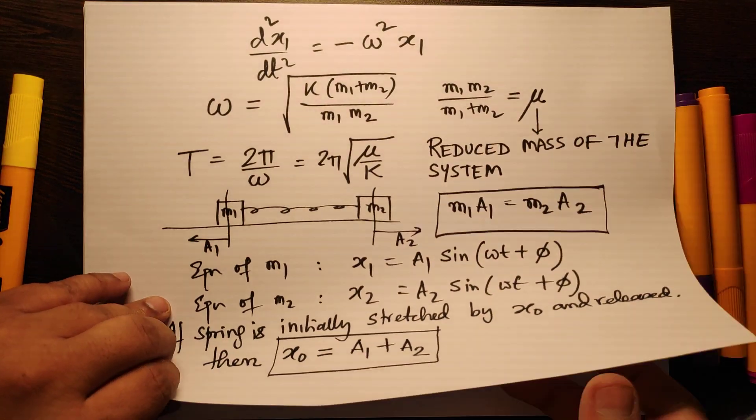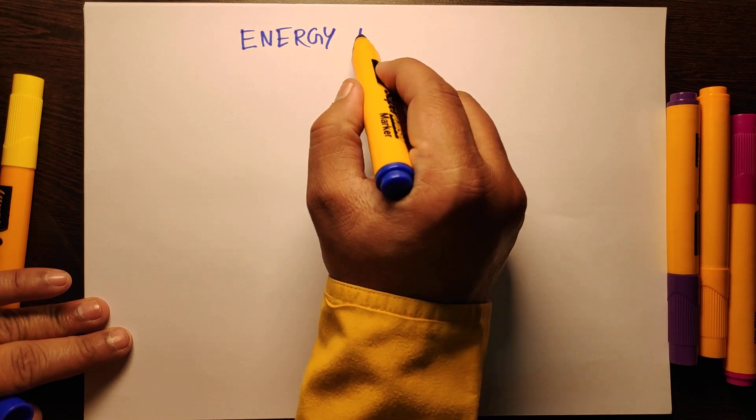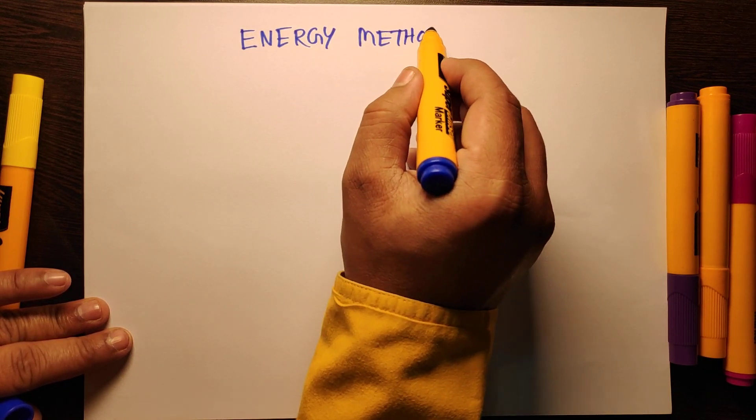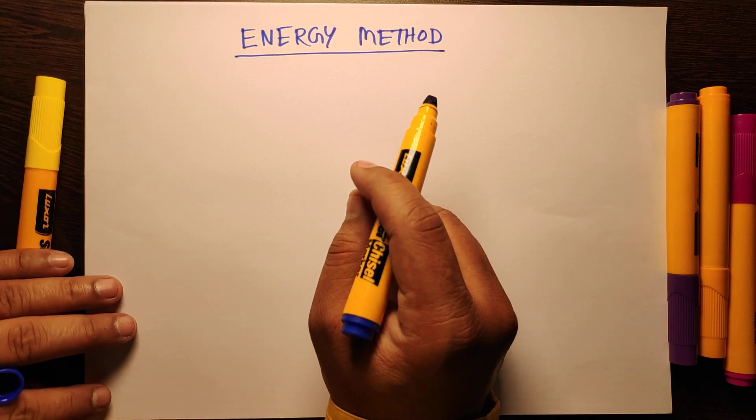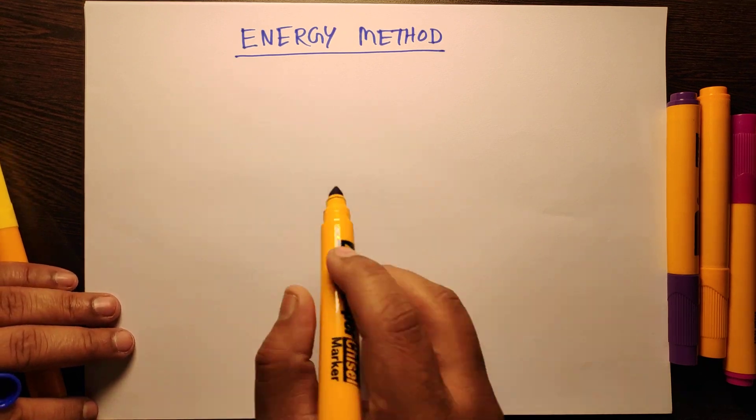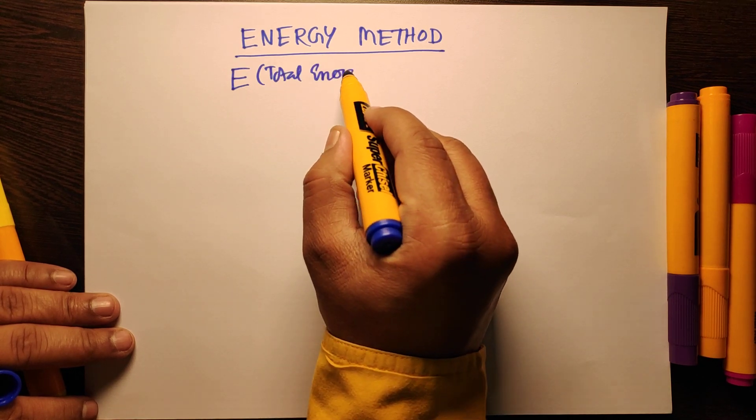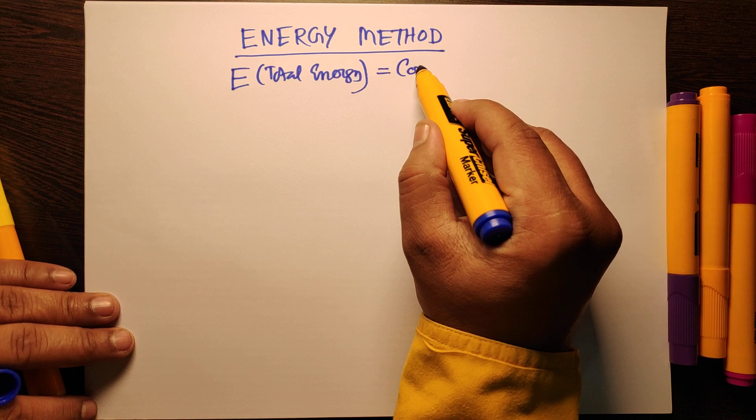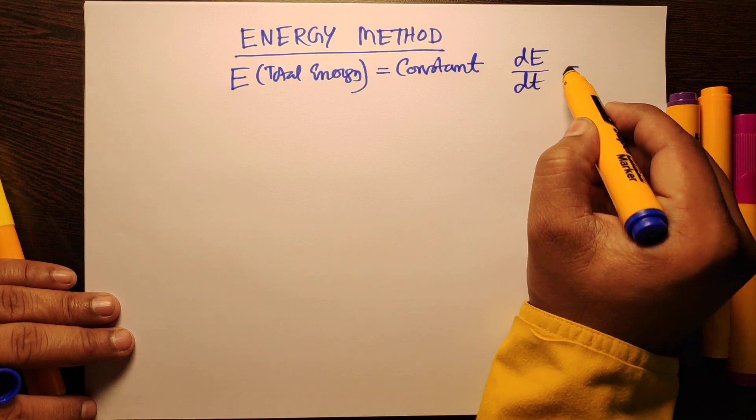Next we will learn one more method for solving some of the problems in simple harmonic motion. That is the energy method. Energy in SHM is constant, so that is why we can write E total energy is equal to constant. You can differentiate this: dE/dt is equal to 0.